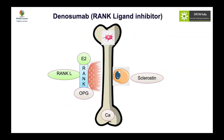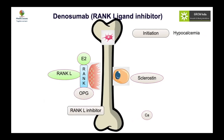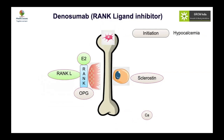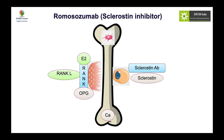Denosumab, a subcutaneous injection given every 6 to 12 months, is now commonly used in adults. It inhibits RANK ligand, decreasing osteoclast bone resorption and increasing bone density. Risk of hypocalcemia is significant. Importantly, unlike bisphosphonates which are deposited in bone for years, RANK ligand inhibitors clear quickly. Once stopped, osteoclasts rebound strongly, causing potential rebound hypercalcemia — so transition to bisphosphonates upon stopping. Dose is 60 to 120 mg every six months, mostly for adult osteoporosis. Sclerostin inhibitors are under investigation as a promising anabolic option.